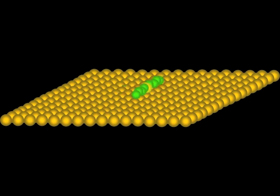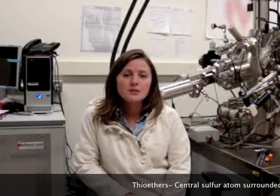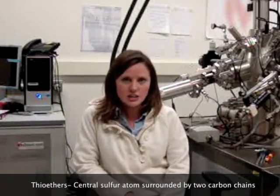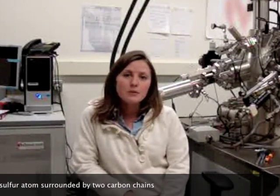Now let's find out how we use STM to study rotating molecules to determine if we can use them as tiny machines. We can use thioethers to study the fundamentals of molecular rotation. Thioethers are molecules that have a central sulfur atom surrounded by two carbon chains. And when we put these thioether molecules onto a gold surface, there is a strong interaction between the gold and the central sulfur atom that anchors the molecule to the surface.